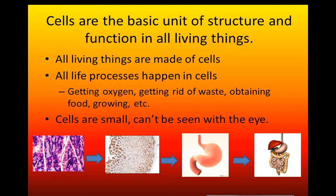Cells are the basic unit of structure and function in all living things. All living things are made up of cells because cells are the fundamental, structural, functional, and hereditary unit of life. All life processes happen in a cell — one cell can perform all kinds of functions like getting oxygen, getting rid of waste, obtaining food, and growing. Cells are small and cannot be seen with the naked eye, so scientists use a microscope to observe them.